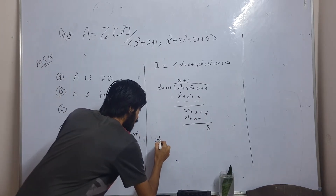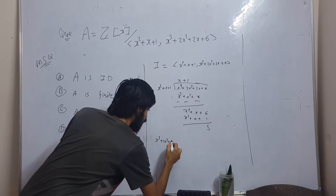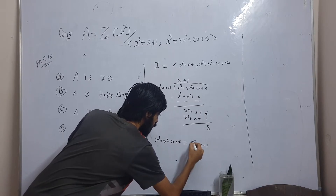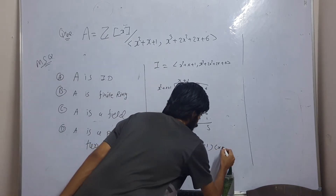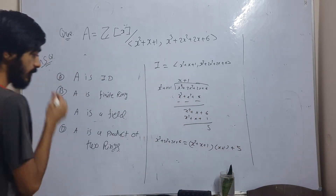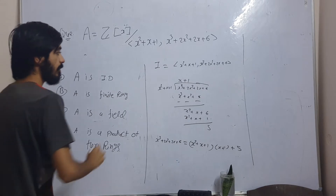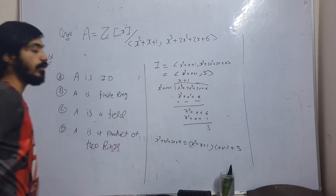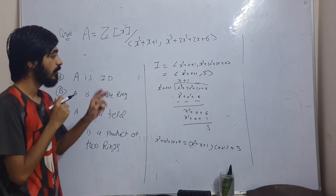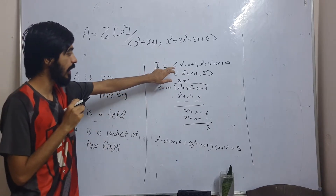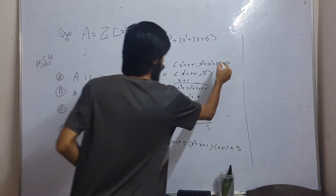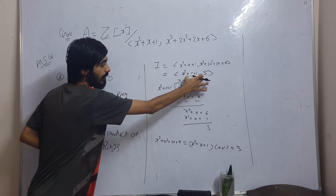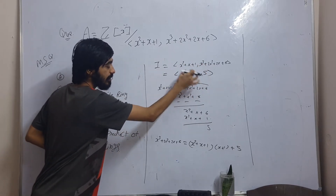So I can write x³ + 2x² + 2x + 6 = (x² + x + 1)(x + 1) + 5. This means the ideal I is the same as the ideal generated by x² + x + 1 and 5. To prove these two ideals are equal, it is enough to show each generator of one ideal lies inside the other.